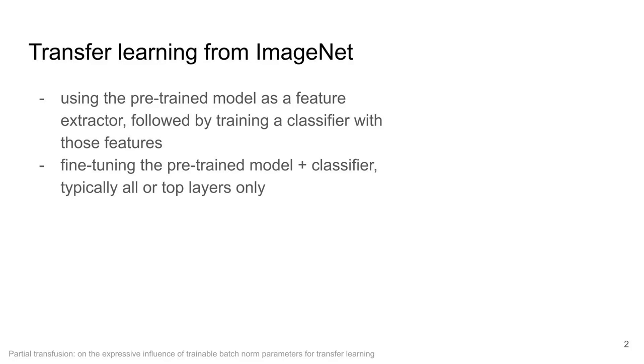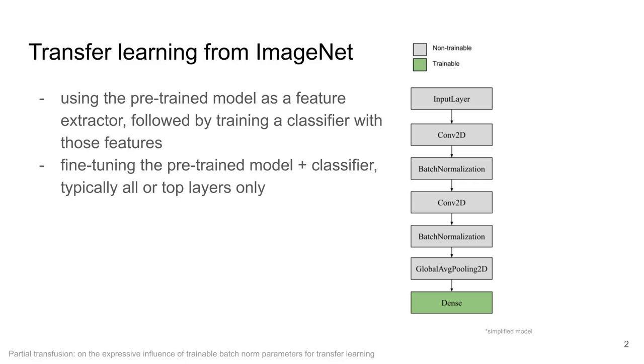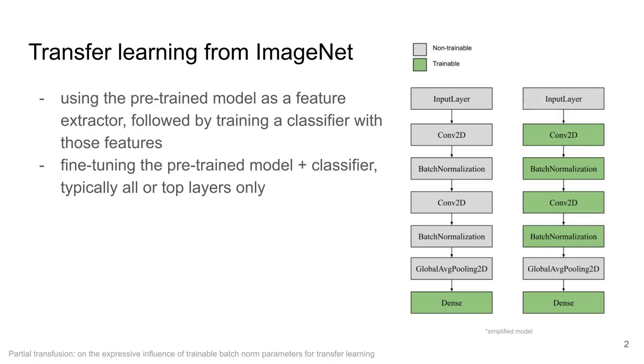Transfer learning from ImageNet is the go-to approach when applying deep learning to 2D medical images. The approach is either to use the pre-trained model as a feature extractor or to fine-tune the pre-trained model either fully or just the top layers.